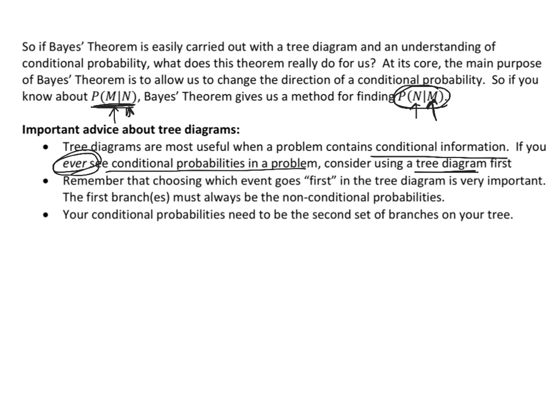I would only go away from the tree diagram if there's absolutely no way you can figure it out. The second piece of advice is: the event that goes first in a tree diagram is really, really important. That first branch always needs to be the non-conditional probability — you really can't put a conditional probability first. It should make sense why: a conditional probability depends on something, so that thing it depends on has to come first. The third point reiterates this: your conditional probabilities have to be the second set of branches because they depend on what came first.